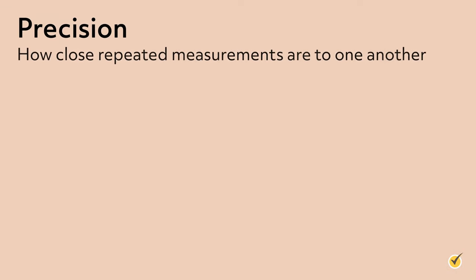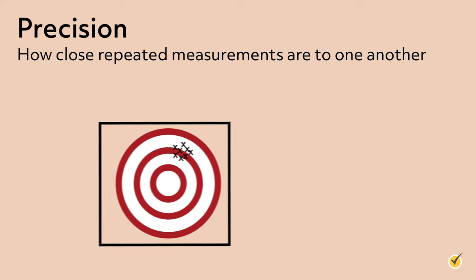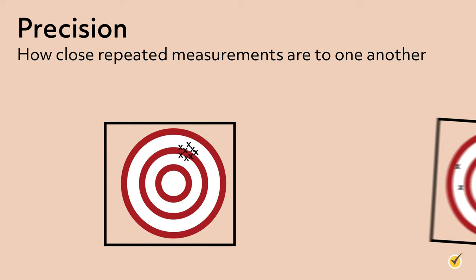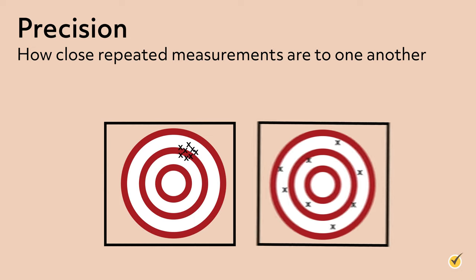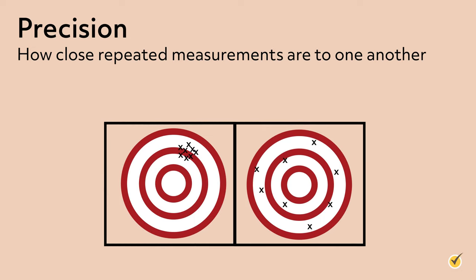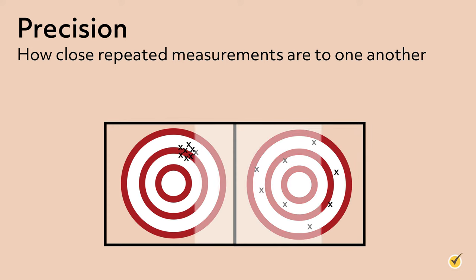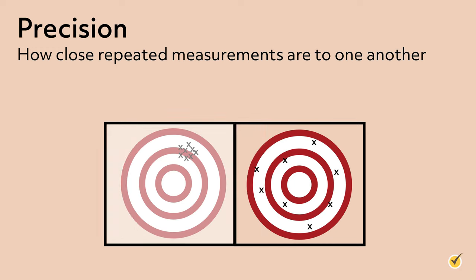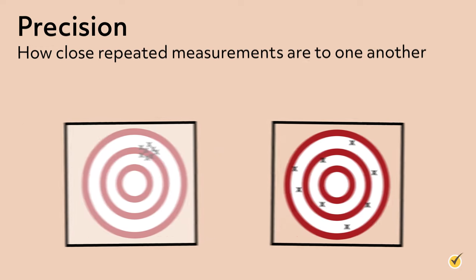Precision refers to how close repeated measurements are to one another. In other words, it's how often we get the same result, regardless of whether it's correct or not. If the measurement is consistent, it is considered to be more reliable. Think of the measurements as points on a target. The target on the left shows precision, because all measurements are approximately the same. The target on the right does not show precision, because these measurements are not approximately the same.